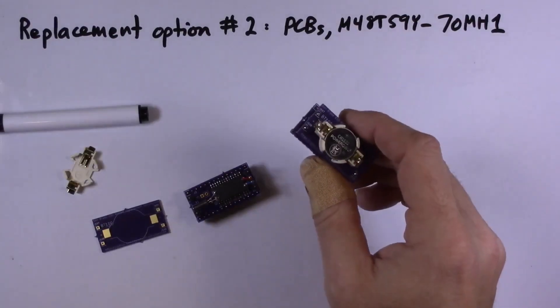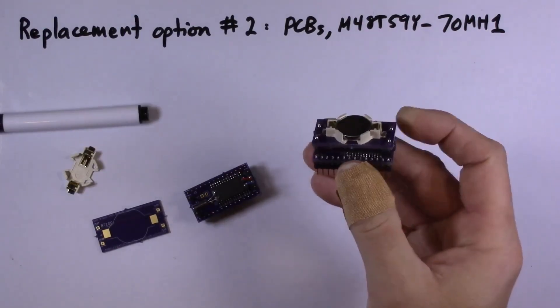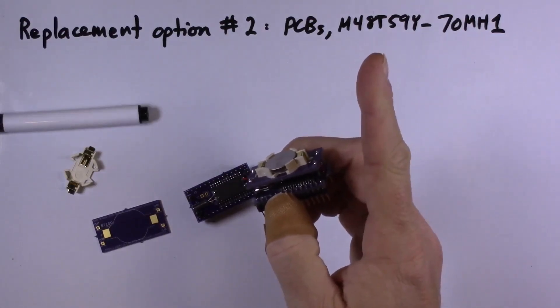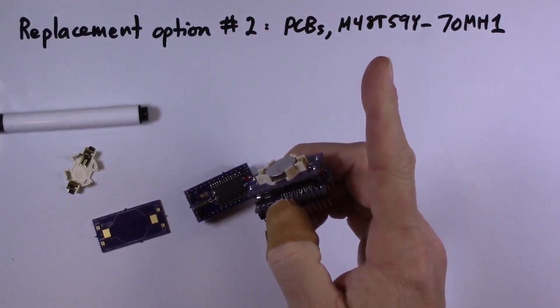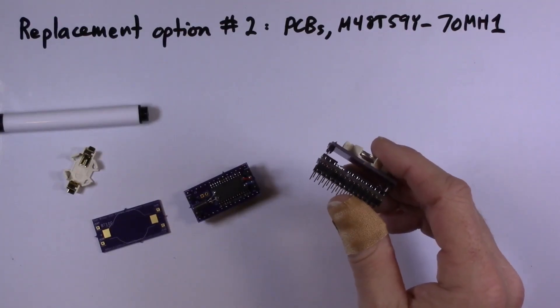What I think is a better replacement option is this module design that I came up with that has the two PCBs, a coin cell battery holder and the surface mount M48T59Y70MH1. Let's take a slightly closer look and I'll describe how you put one of these things together.